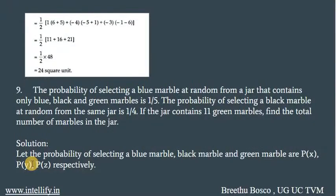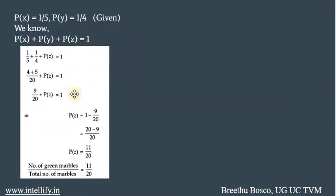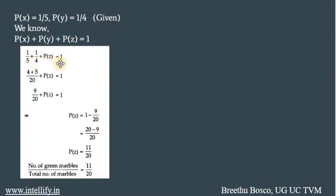Let us denote the probability of getting a blue marble by P(X), probability of selecting a black marble by P(Y), and probability of selecting a green marble by P(Z). From the question, P(X) = 1/5 and P(Y) = 1/4. We know that P(X) + P(Y) + P(Z) = 1 — that is, the sum of probabilities of selecting blue, black and green marbles equals 1. So 1/5 + 1/4 + P(Z) = 1, giving P(Z) = 11/20.